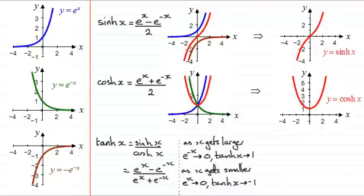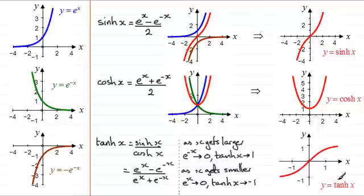So putting those ideas together, what we get is this graph for y equals tanh x. It goes through the origin, and as x gets larger, it tends towards 1. An asymptote. So I'll just mark that asymptote in there as a dotted line. And we notice that as x gets smaller, tanh x tends towards minus 1. So minus 1 is also an asymptote.